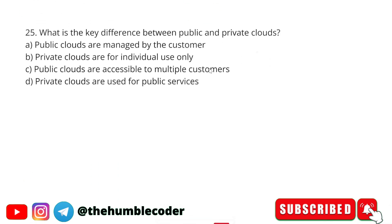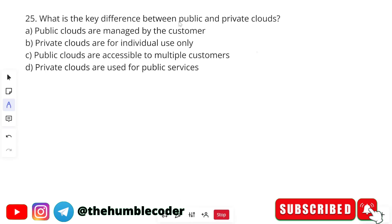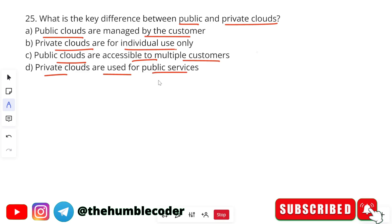What is the key difference between public and private clouds? Options are: public clouds are managed by the customer, private clouds are for individual use only, public clouds are accessible to multiple customers, or private clouds are used for public services. The correct answer is option C — public clouds are accessible to multiple customers. That is the main difference between public and private cloud.